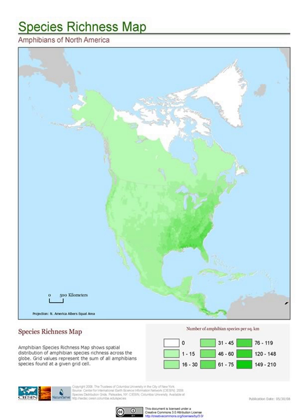On large scales, the pattern of distribution among individuals in a population is clumped.